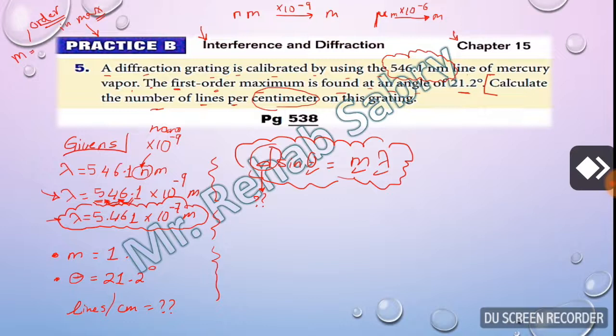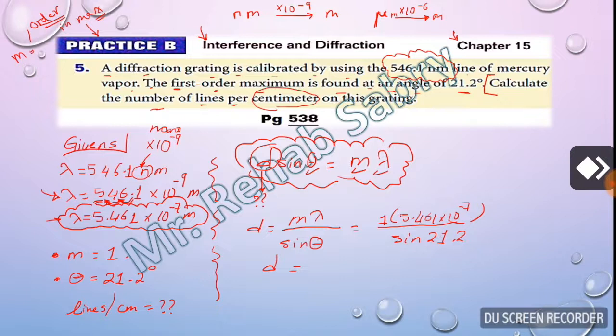So let's find d. d equal m lambda divided by sine theta. m equal 1, lambda equal 5.461 times 10 to the power of negative 7, divided by sin 21.2 degrees. Use the calculator.